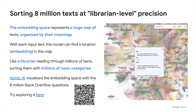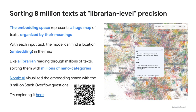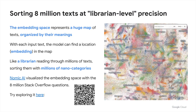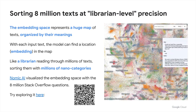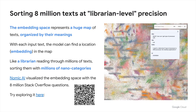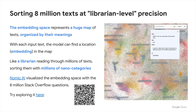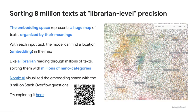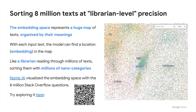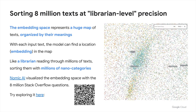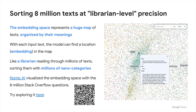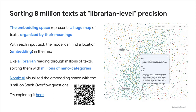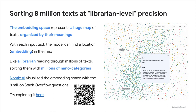By visualizing the embedding space, you can actually observe how the model sorts texts at librarian-level precision. Nomic AI provides a platform called Atlas for storing, visualizing, and interacting with embedding spaces, and they worked with Google for visualizing the embedding space of the 8 million Stack Overflow questions. You can try exploring the space, zooming in and out to each data point in your browser, courtesy of Nomic AI.